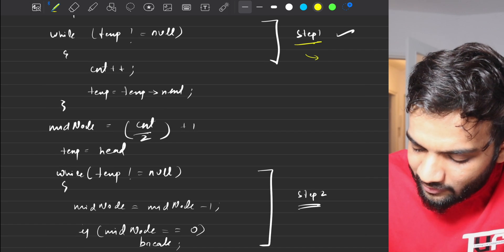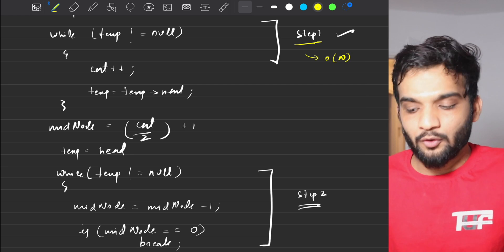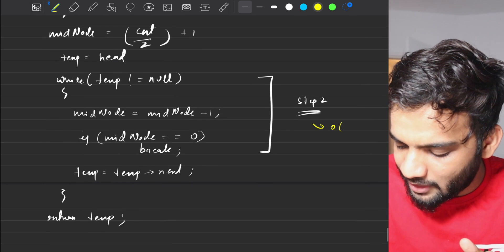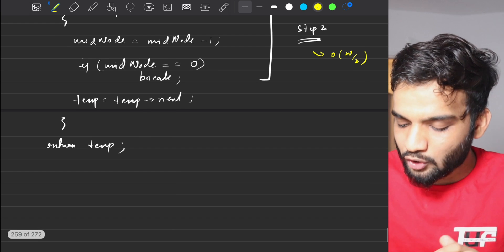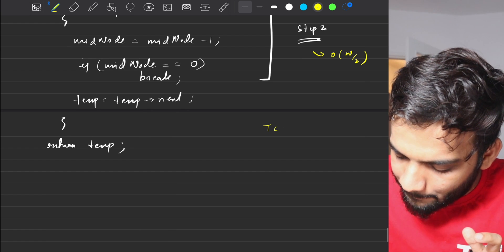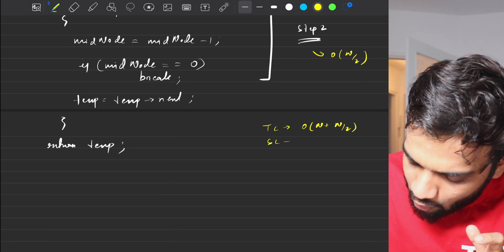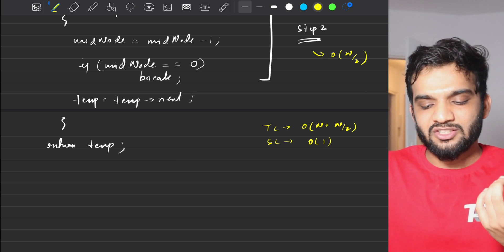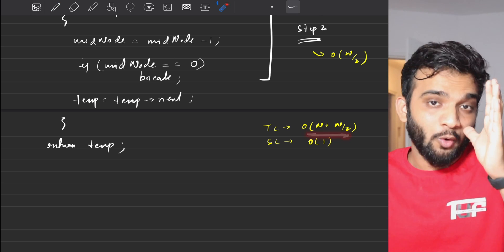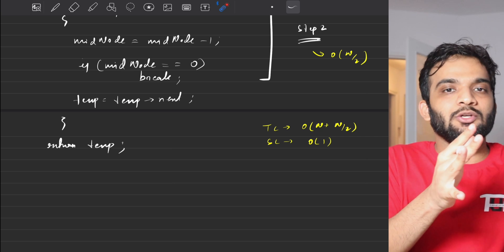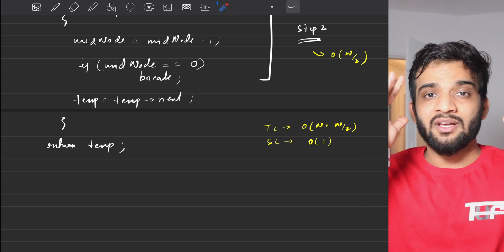The time complexity of step one is O(n) and step two is O(n/2), giving an overall time complexity of O(n + n/2). Space complexity is O(1). The interviewer will ask you to optimize this, since it's a two-pass solution — you traverse once to count, then again to find the middle. Can you do it in one pass?